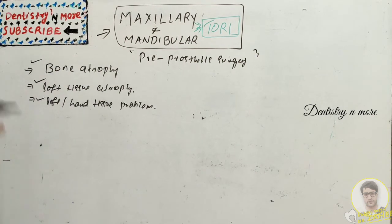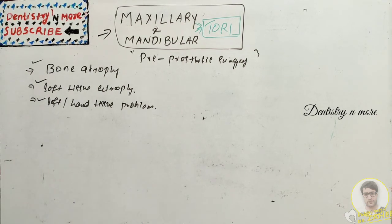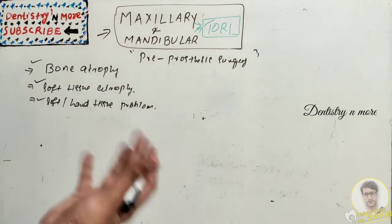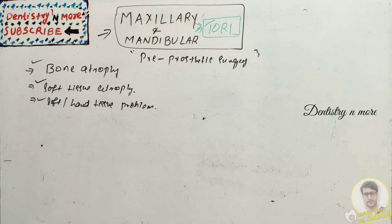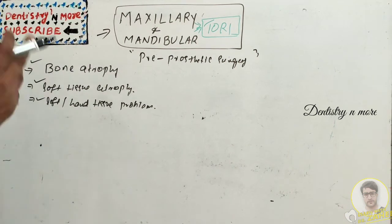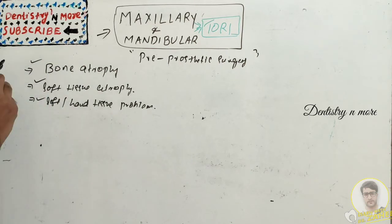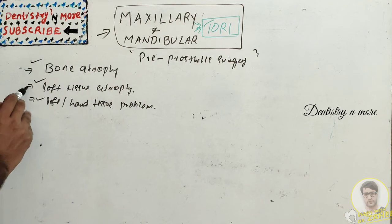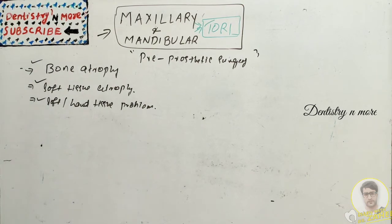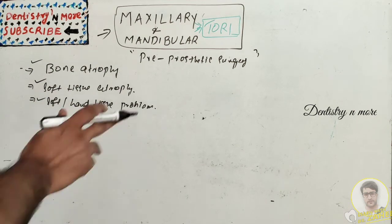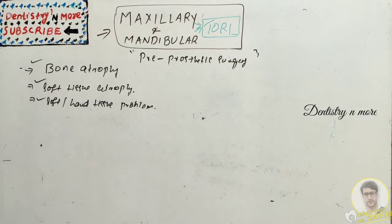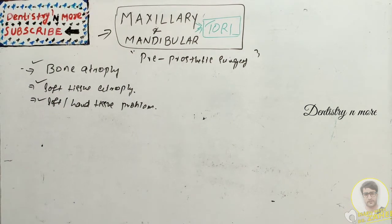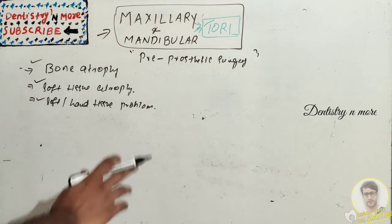Prosthetics is a replacement of missing teeth — lost or congenitally absent. Once the prosthesis is received, the patient can perform many functions such as mastication, chewing, and facial expression. But some patients may not be able to receive a prosthesis because of problems such as bone atrophy, soft tissue atrophy, or localized soft or hard tissue problems.